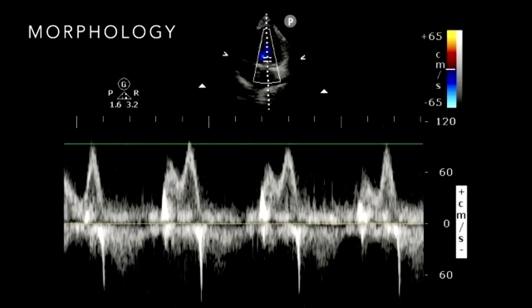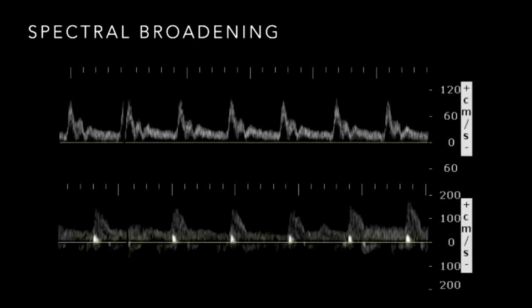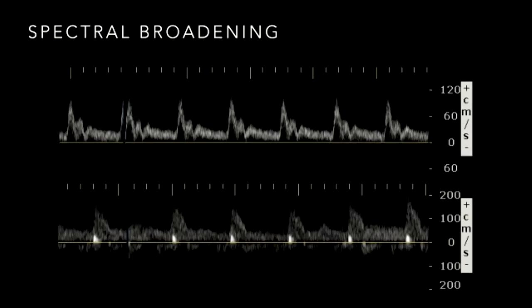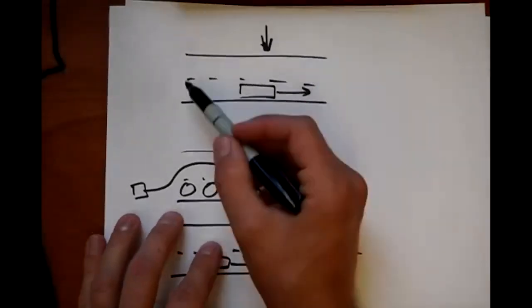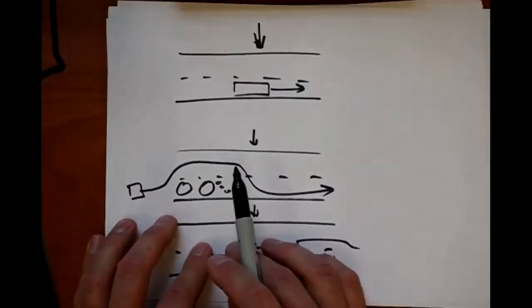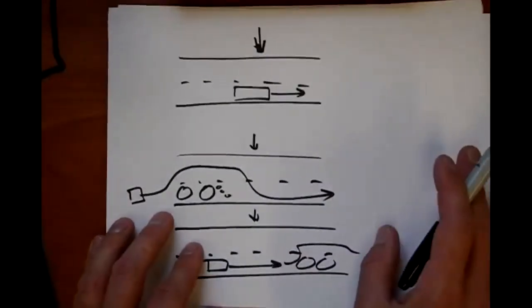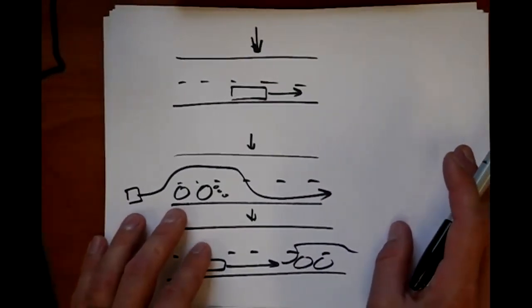That morphology, even before we get into calculations, can have a profound effect on interpretation. That's the first thing spectral Doppler can do for us. The next thing is a phenomenon called spectral broadening. As we talked about with our previous analogy, in a normal blood vessel you have a column of blood with various ranges of velocities — the ones toward the periphery tend to be slightly slower than those toward the center.